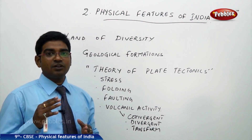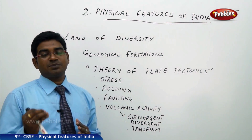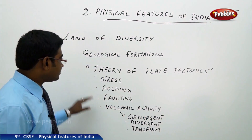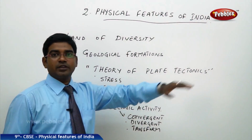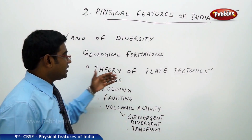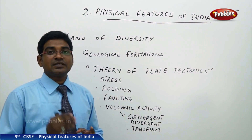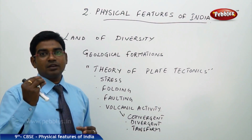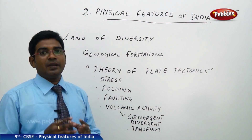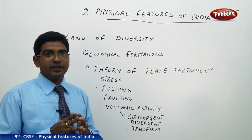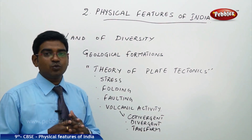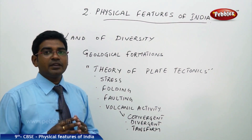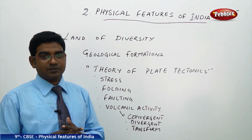According to the theory given by Alfred Wegener, the most accepted theory for the formation of land masses is the theory of plate tectonics. This theory reveals that the entire earth has seven major plates and many minor plates. These plates move towards each other sometimes, collide with each other, and sometimes they move apart, forming different landforms at different places.